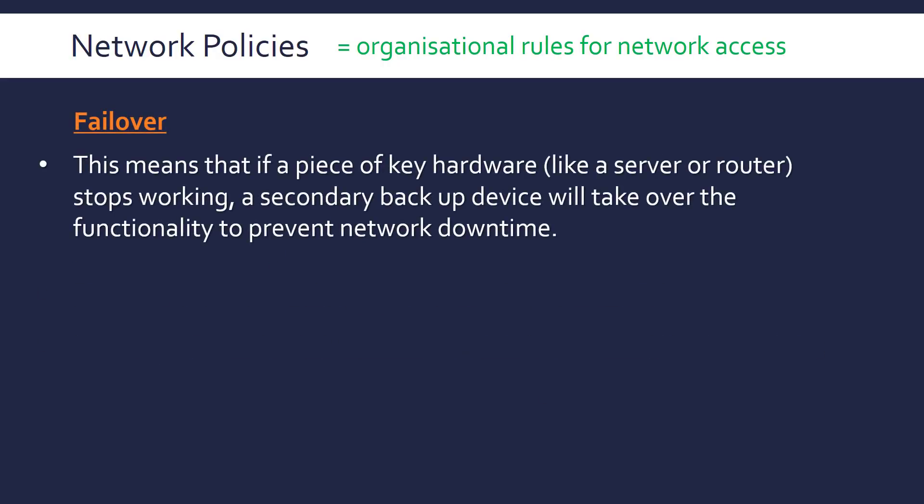Another policy often talked about is failover, and this is all about having a backup of key hardware. The backup policy is for backing up data; this is for backing up actual hardware. So if a piece of key hardware like a server or router goes down, this policy ensures there's a secondary backup device to take its place to prevent any downtime. From a security point of view, say you had a device that works as a physical firewall to filter packets — if that device goes down, this policy might mean you've got a backup firewall, maybe a software version or another device to do this functionality.